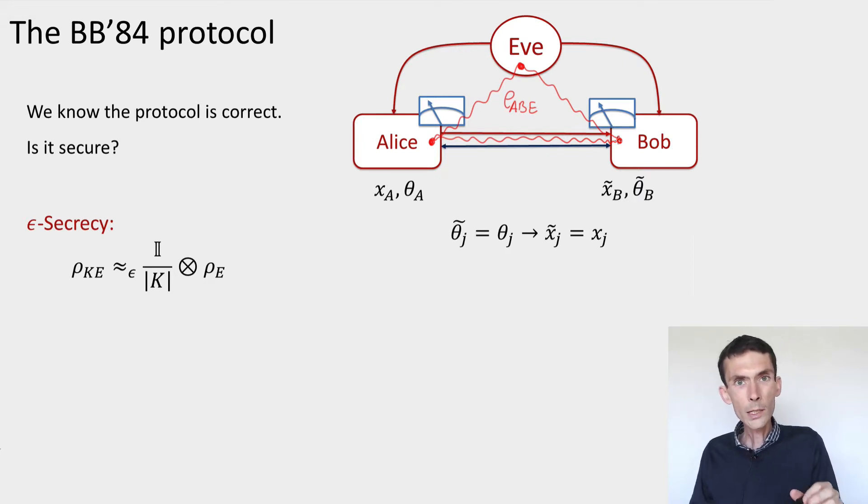We've already seen previously that this protocol is correct, meaning that if Eve prepares the state that we are hoping she prepares, a state which is simply n copies of the EPR pair φ⁺ shared between Alice and Bob and nothing on her side, then Alice and Bob will come up with the same shared key K, and this key will be uncorrelated with the eavesdropper.